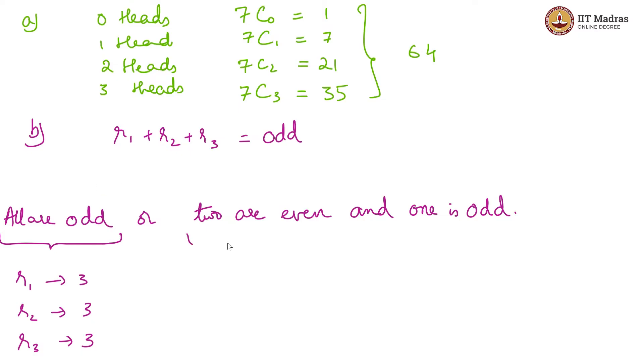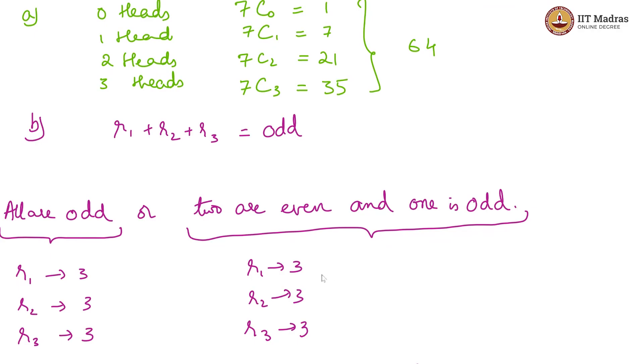Whereas, in the next case, again you will have first result will have three options, second result will have three options and third result will have three options. So, these options are three, three, three because there are also three even numbers. So, let us assume that r1 is odd, then r1 has the option of being one, three, five.